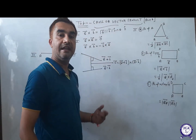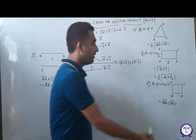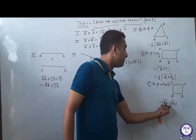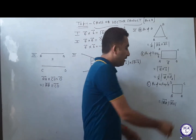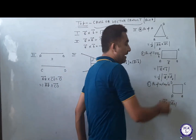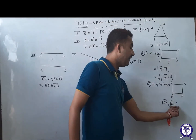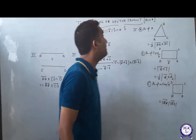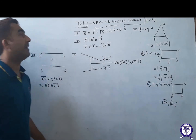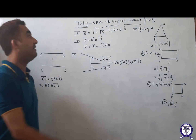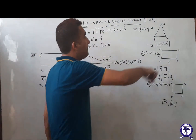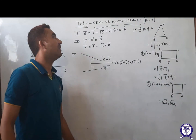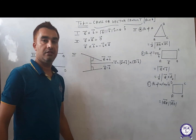Area of rectangle is length into breadth: get side AB and its magnitude for length, get AD and its magnitude for breadth, then multiply. That is the total concept used in CROSS or vector product. Thank you.